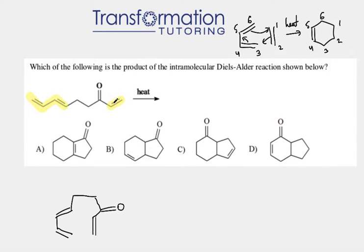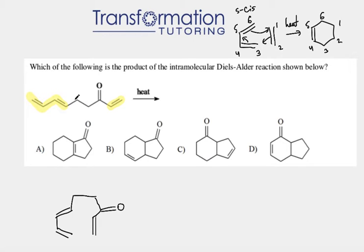We can see that an intramolecular reaction can happen here. However, currently these are not really aligned in such a way that it will be easy for us to predict the product. Moreover, the diene is not in S-cis conformation. S-cis is where the two double bonds are on the same side of the single bond, and here they are not.